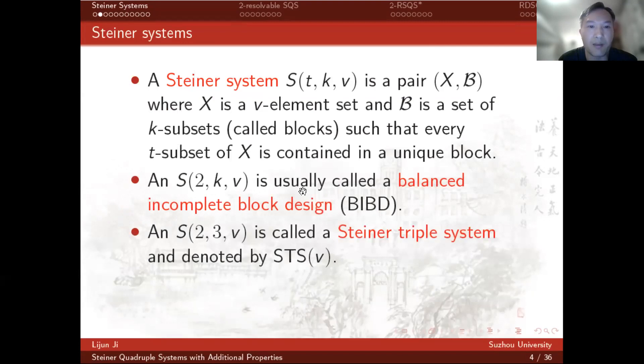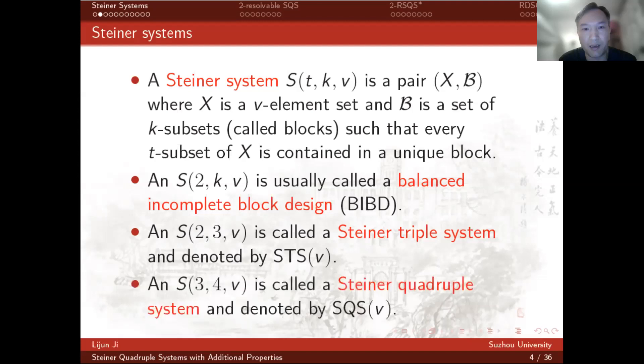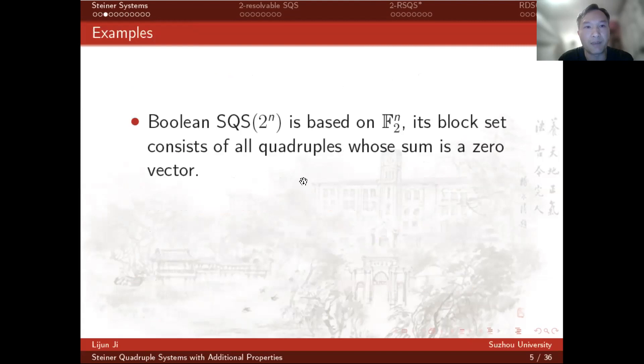Especially, S(2, k, v) is usually called a balanced incomplete block design (BIBD). An S(2, 3, v) is called a Steiner triple system and denoted by STS(v). And S(3, 4, v) is called a Steiner quadruple system and denoted by SQS(v).